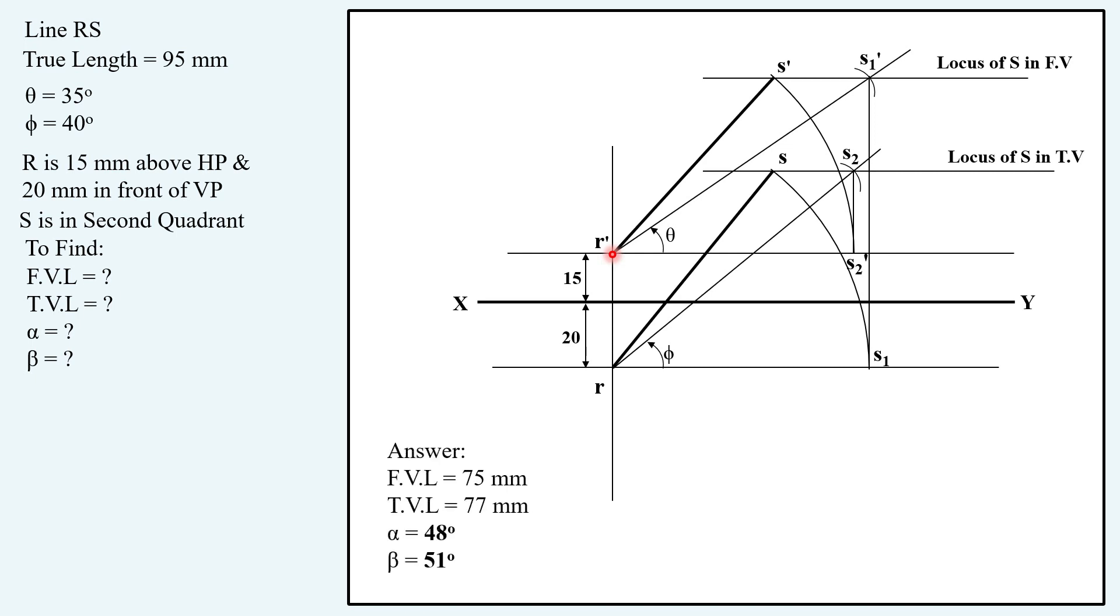If you follow these steps, the answers will be front-view length 75 mm, top-view length 77 mm, alpha 48 degrees, beta 51 degrees.